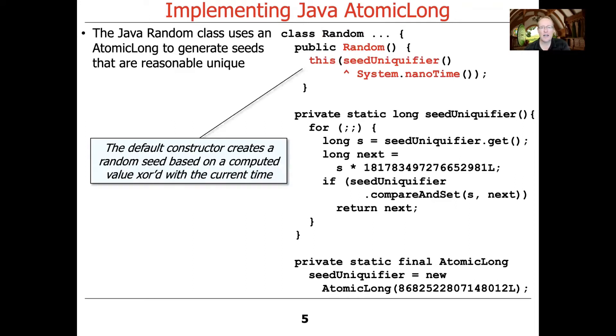Okay, so here's what it looks like. You can see that the constructor of Random is going to call up to a default constructor, and it's going to pass in the results of seedUniquifier. This is a funny name. We'll look at what a seed uniquifier is in a second. And then we're going to XOR that with System.nanoTime.